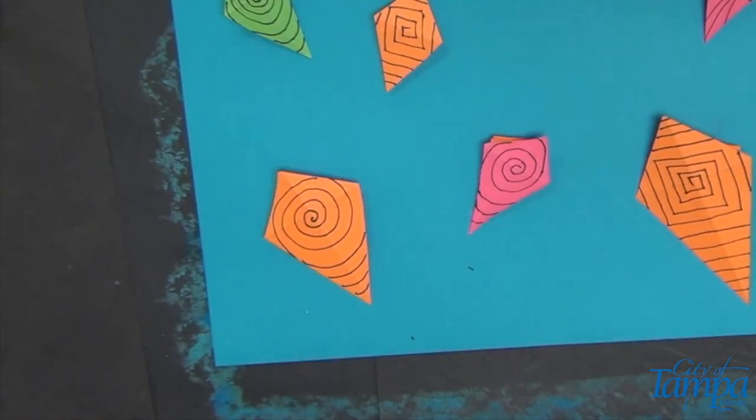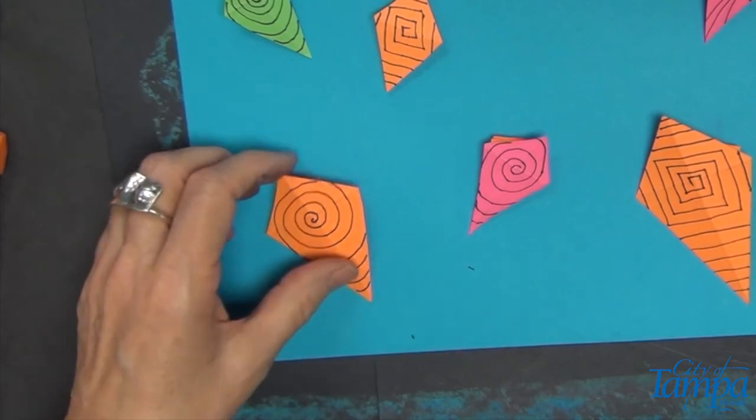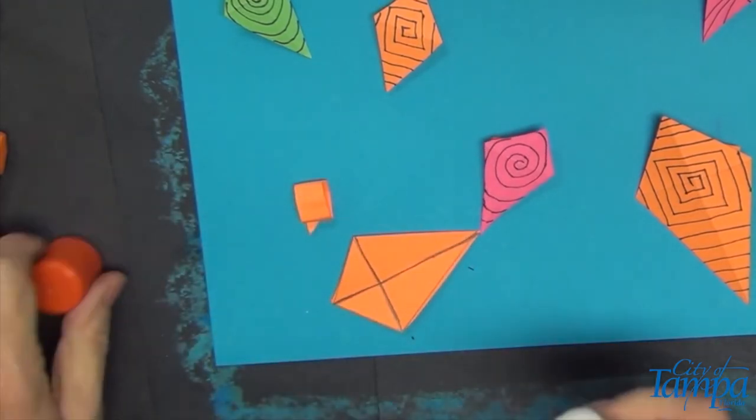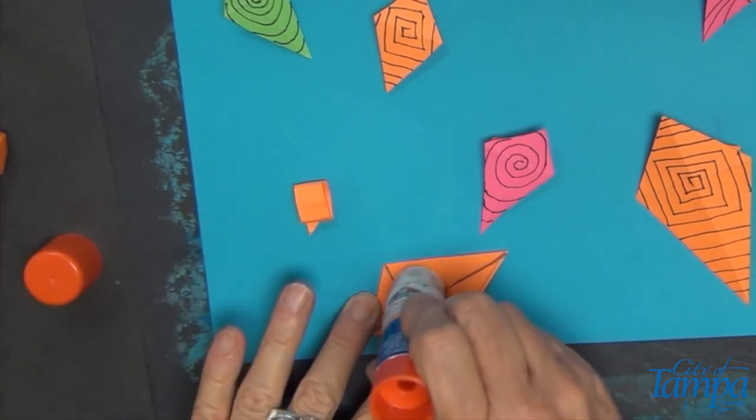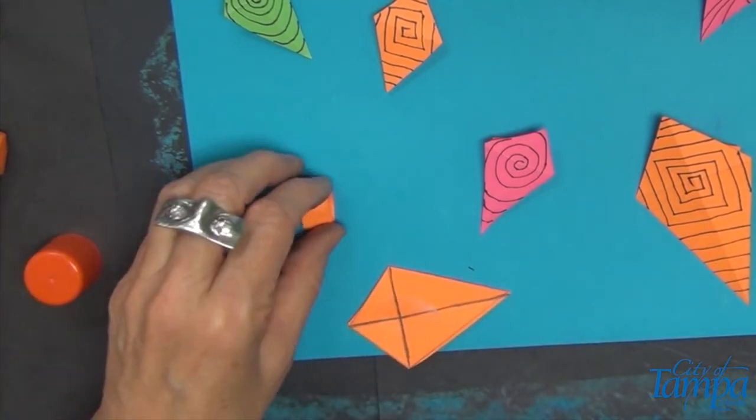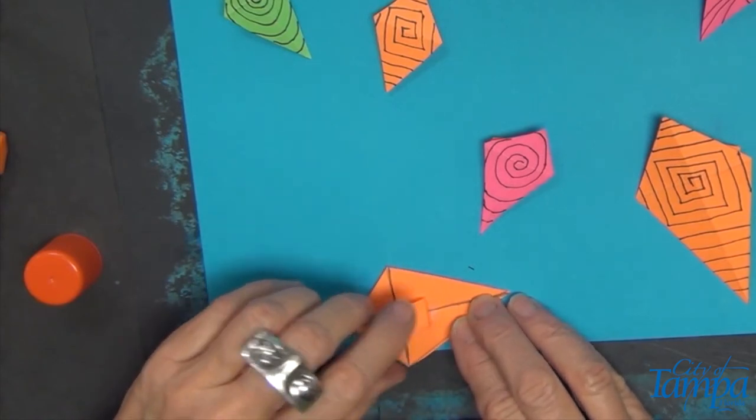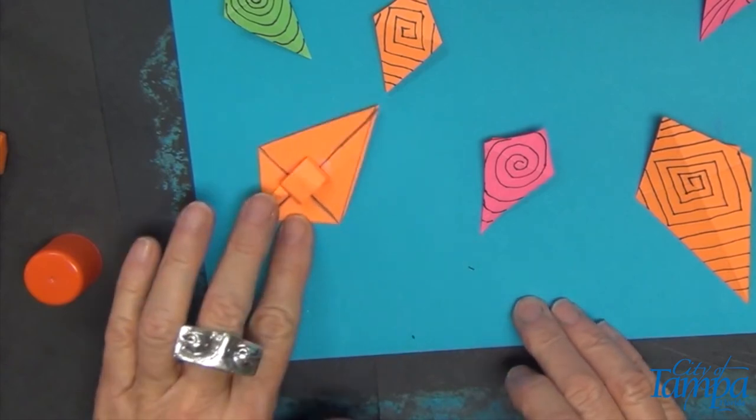Once I've laid out how I want my kites to be designed, I'm going to turn them over and put some glue down with my glue stick, and I'm going to add that little ring that we made into the center.